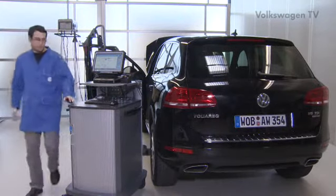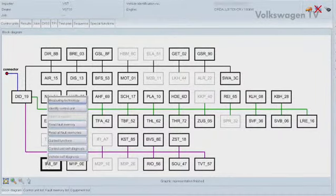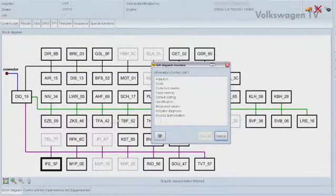Start by applying the guided fault-finding mode. For this vehicle, you can find the navigation system in the block diagram under the label IFE 5F for Control Unit 1 for Information Electronics.